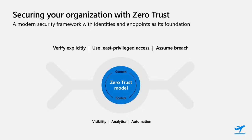Secondarily, we want to make sure that the user has the least privileges needed — minimal permissions when accessing something, no more than is needed. And then finally, assume breach. A lot of this is around compartmentalizing access — I don't want to grant a connection and give that user access to everything. If you're just accessing the HR web portal, I'll grant you access if you meet the conditions, but that doesn't give you access to other things.